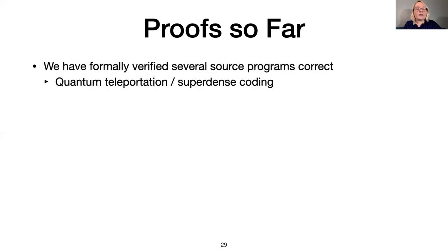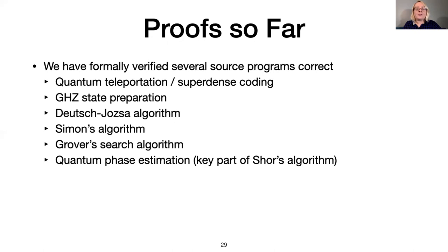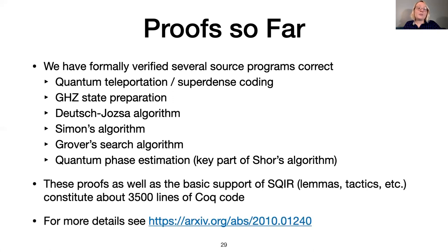We have formally verified a range of textbook quantum algorithms in SQUIRE, from quantum teleportation to quantum phase estimation, a key component of Shor's factoring algorithm. We didn't design SQUIRE to be a source-level programming language, but in reality many quantum algorithms, like those listed on the slide, are described using circuits, which makes them easy to encode in SQUIRE. For more details on the benefits of using SQUIRE for source program proofs, see our draft, Proving Quantum Programs Correct, available on arXiv.